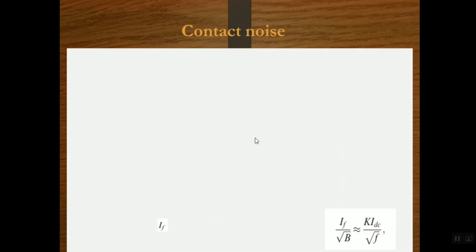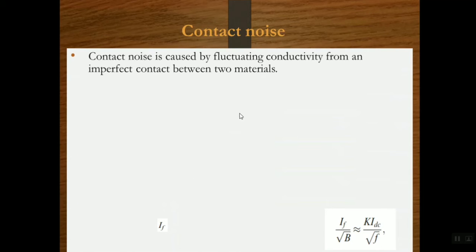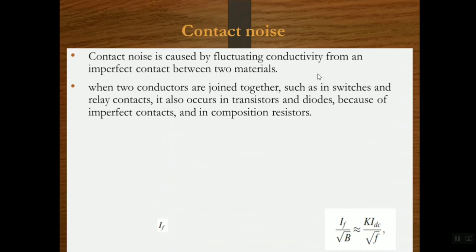Contact noise occurs because of fluctuating conductivity from an imperfect contact between two materials. When two conductors are joined together, such as in switches and relay contacts, it also occurs in transistors and diodes because of imperfect contacts, and in composition resistors.